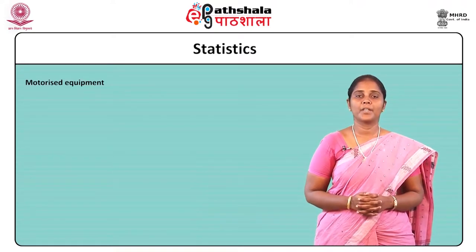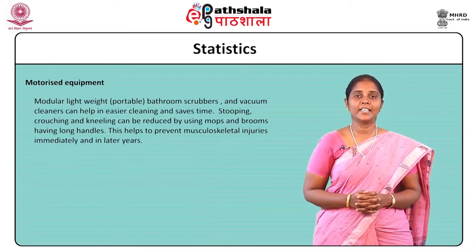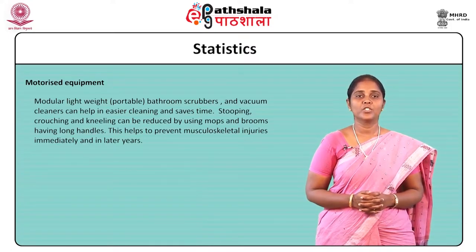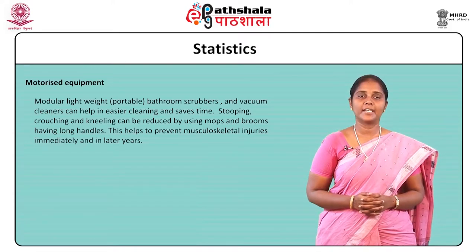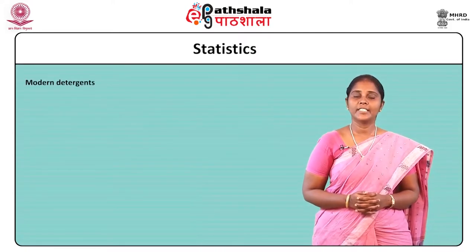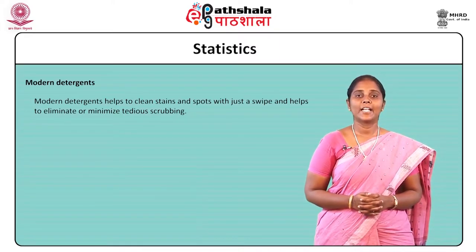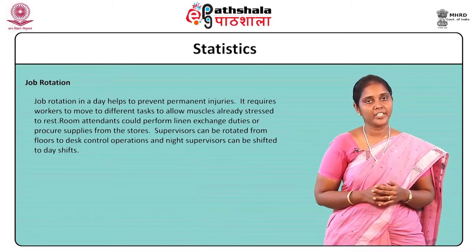Next is motorized equipment. Modular, lightweight bathroom scrubbers and vacuum cleaners can help in easier cleaning and save time. Stooping, crouching, and kneeling can be reduced by using mops and brooms with long handles. This helps to prevent musculoskeletal injuries immediately and in later years. Modern detergents help to clean stains and spots with just a swipe and eliminate tedious scrubbing. Job rotation in a day helps to prevent permanent injuries.